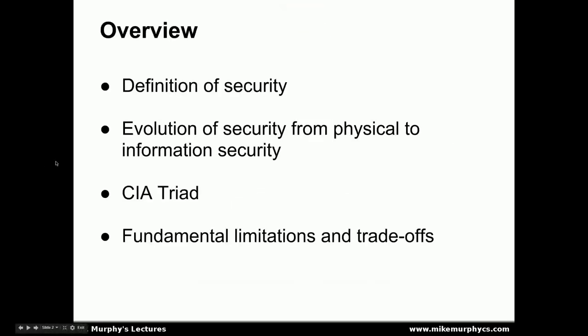I'm going to begin by defining what we mean by security, discuss how security from the physical world evolved into the information world, talk about something called the CIA triad, which establishes the principles of information security that we typically use for evaluating systems, and then talk about some of the fundamental limitations and trade-offs between both security and functionality and between principles in the CIA triad.